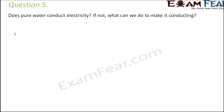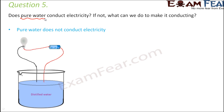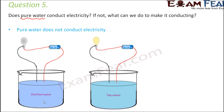Question number five: does pure water conduct electricity? If not, what can we do to make it conducting? Pure water, meaning distilled water with no impurities, no salts, nothing — will never conduct electricity. To make it conducting, we can add salts or acids to it. For example, tap water which contains dissolved salts, sea water, or salt water — all of these can conduct electricity because they have salts in them.